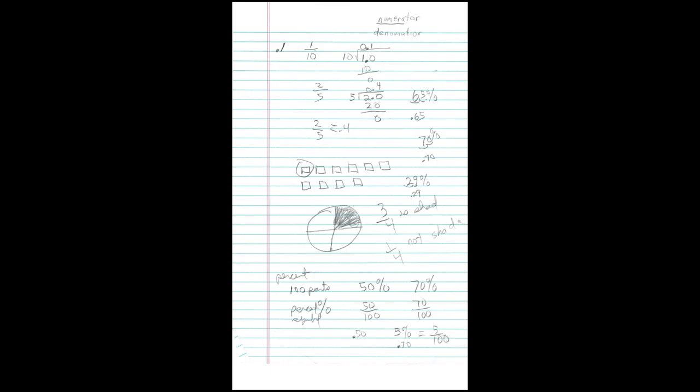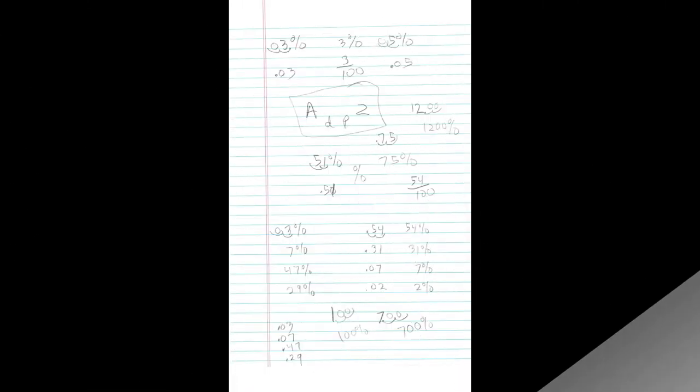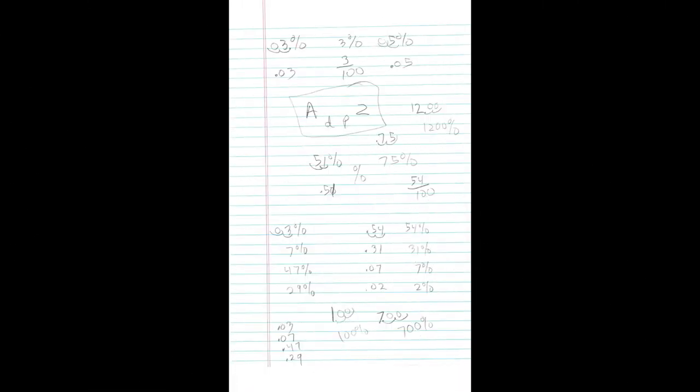So now, later on, let's say you wanted to turn a fraction into a decimal. What you're going to learn is you divide what we call the denominator. At the top, we call it the numerator. At the bottom, we call it the denominator. Normally, in order to turn any fraction into a decimal, you divide the denominator into the numerator — it's the bottom into the top. So I would say ten into one.